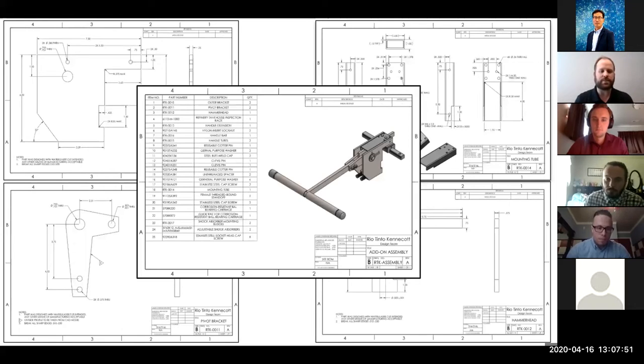This front and center is the assembled drawing for our add-on mechanism with our bill of material on that drawing. In the four quadrants behind us, four of the eight components will have to be manufactured. Of the 25, eight of them have been manufactured. The remaining are purchased components from McMaster. That was one of the stipulations that Rio Tinto asked is that we try to minimize the amount of components that needed to be manufactured and try to incorporate as many off-the-shelf parts as possible.